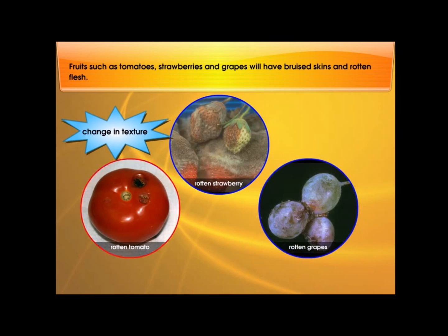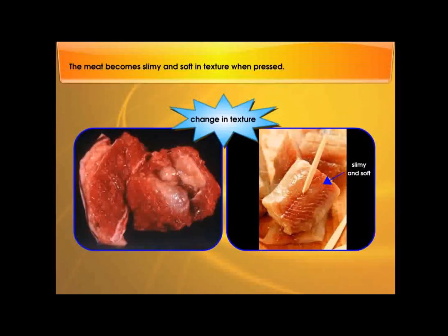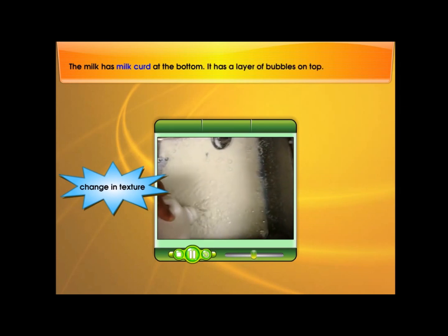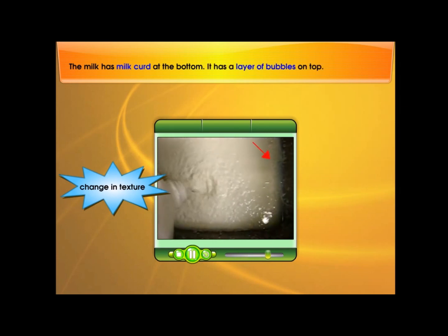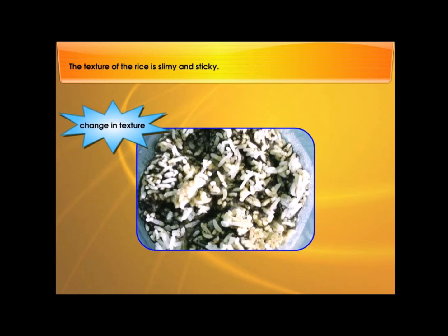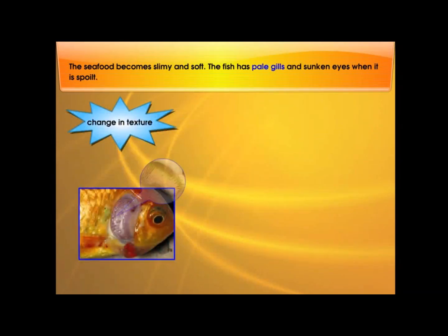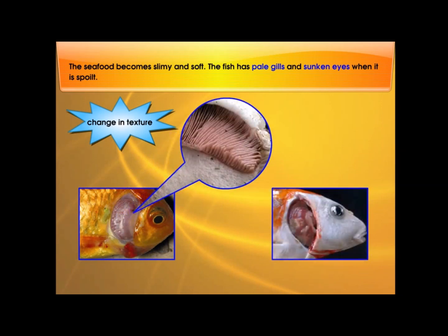Fruits such as tomatoes, strawberries, and grapes will have wrinkled skins and rotten flesh. The meat becomes slimy and soft in texture when pressed. The milk has milk curd at the bottom and a layer of bubbles on top. The texture of the rice is slimy and sticky. The seafood becomes slimy and soft. The fish has pale gills and sunken eyes when it is spoiled.